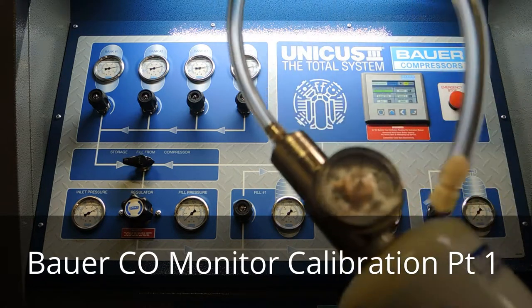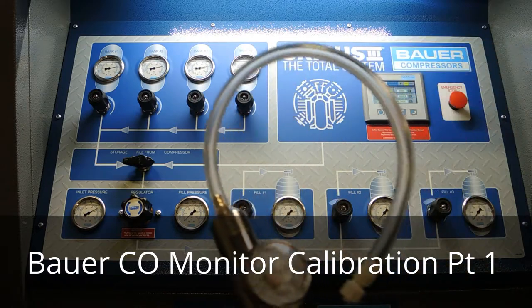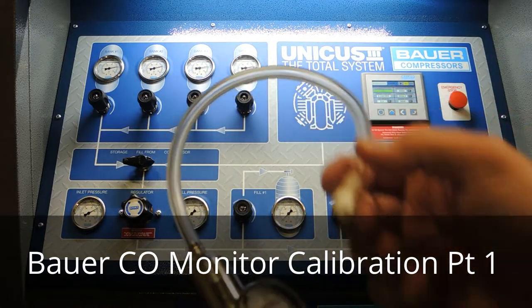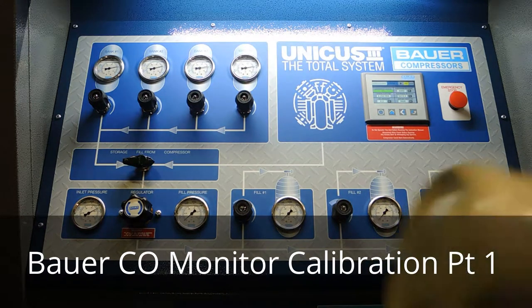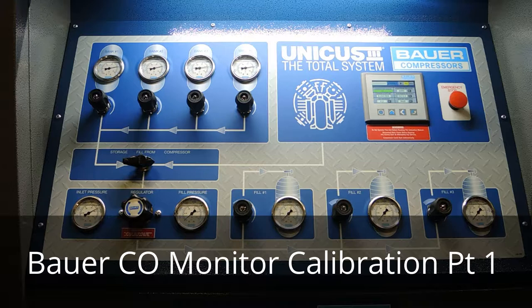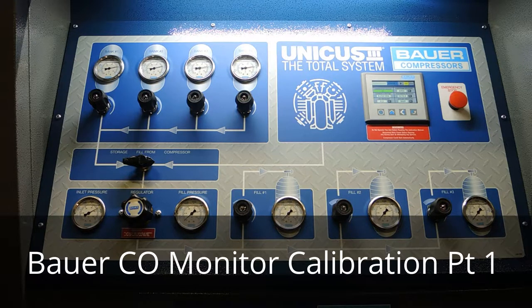You're also going to need the special regulator. These come with the compressors, regulator along with the little adapter to make the connection. If your gases are expired, you want to go ahead and call Bauer or call your distributor and order those test gases before you go through the calibration.